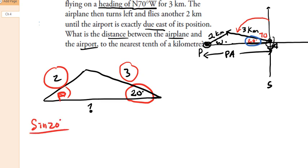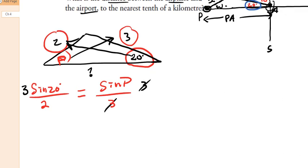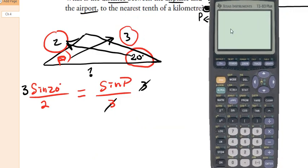If we set up the sine law: sine of 20 degrees over 2 equals sine of P over 3, because sine of 20 pairs with its opposite side of 2, and sine of P pairs with its opposite side of 3. Multiply both sides by 3 and calculate on your calculator: 3 times sine of 20, divided by 2. We should get 0.513.